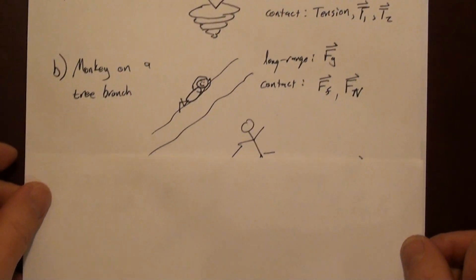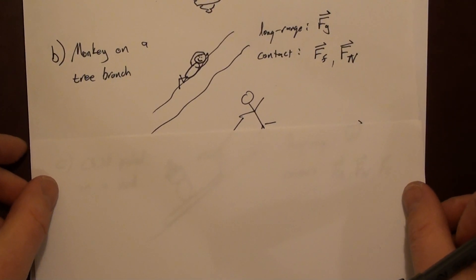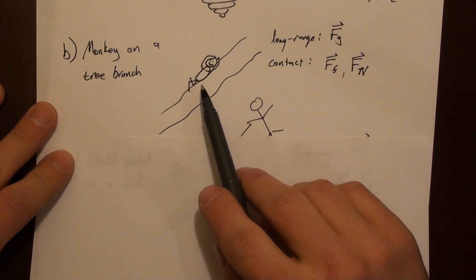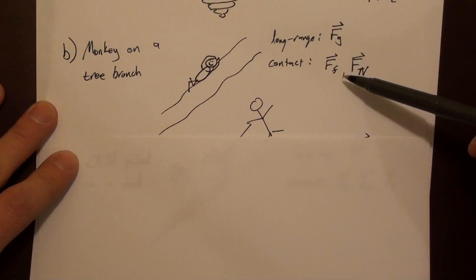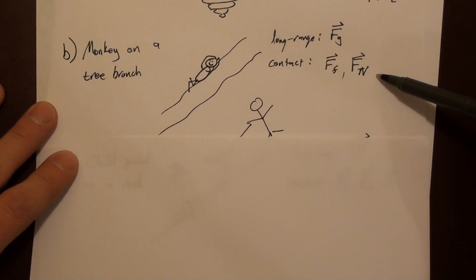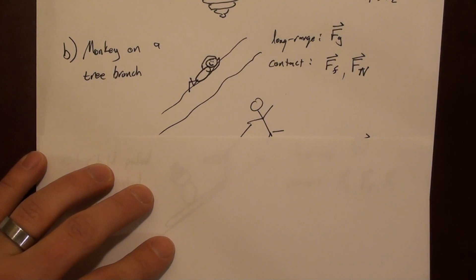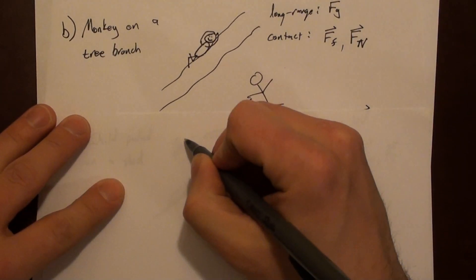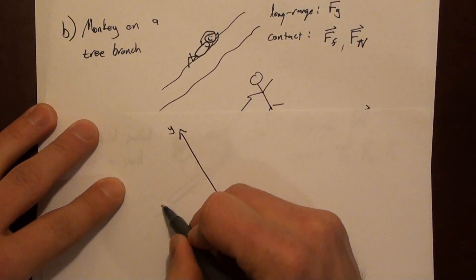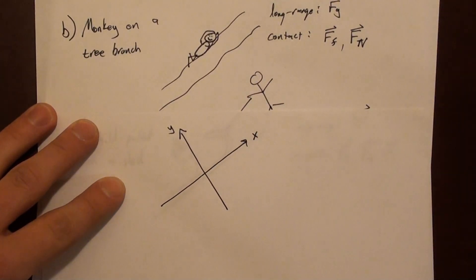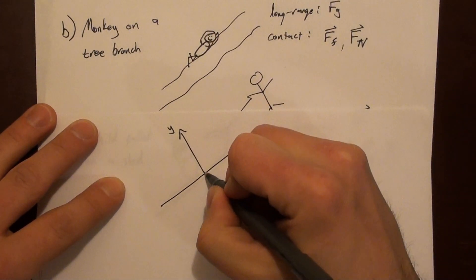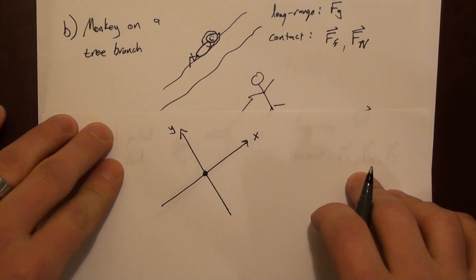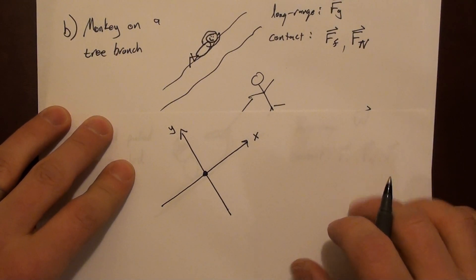Now for a second situation — a monkey on a branch. The monkey is sitting on an inclined branch. We have long-range force gravity and two contact forces with the branch: friction and a normal force. In this system it makes sense to tilt the axes, so y points perpendicular to the branch and x points along it, with the monkey as a dot at the origin.